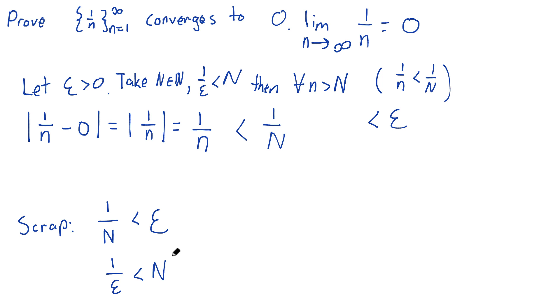And by my little scrap work, we have it right here. Since 1 over epsilon is less than N, then 1 over N is less than epsilon. Maybe I left a little bit too much of a gap here. But 1 over N is in fact less than epsilon. And hey, there we have it.